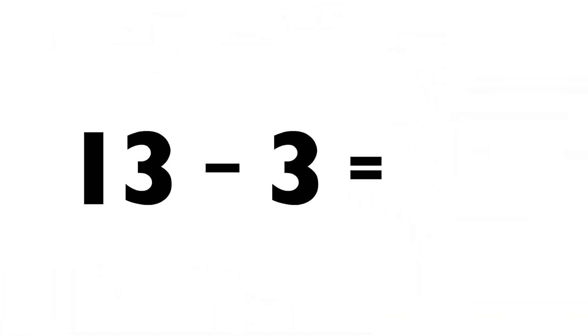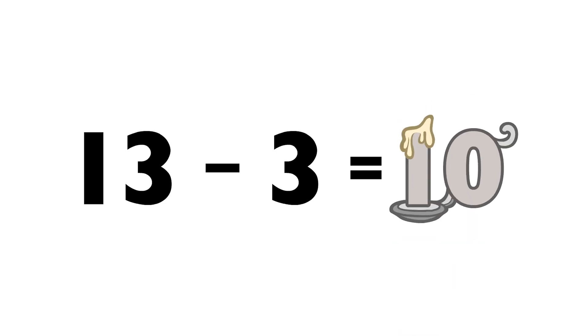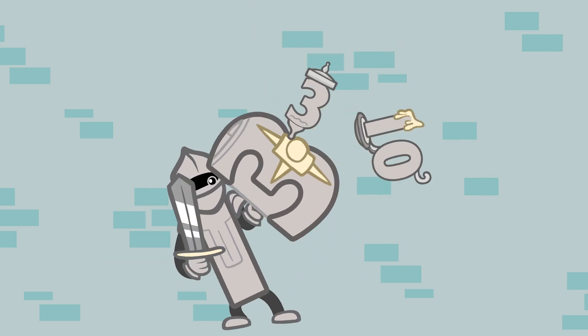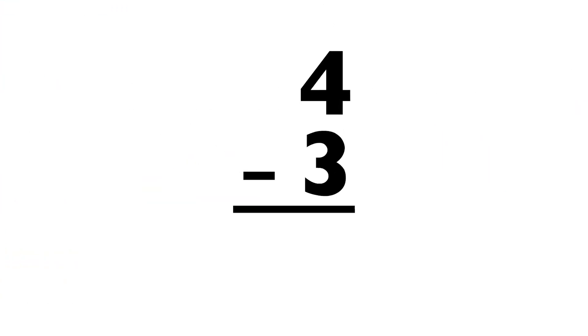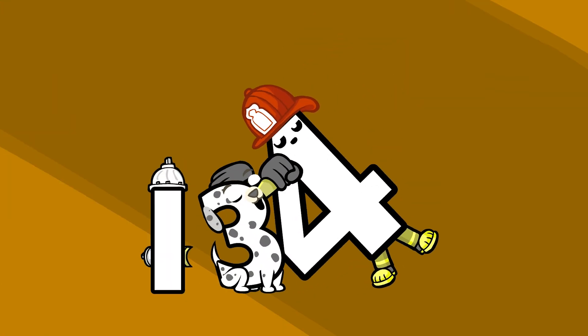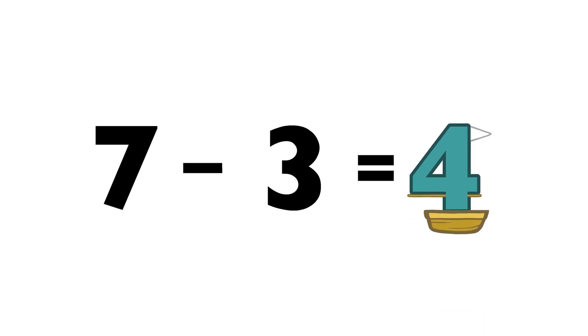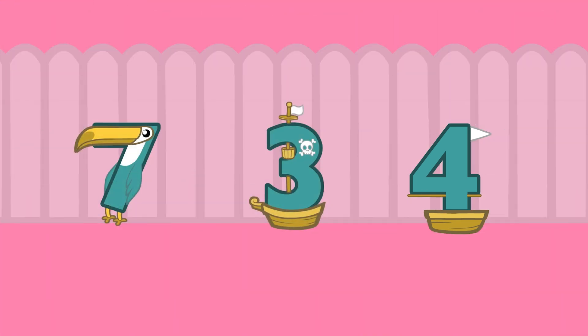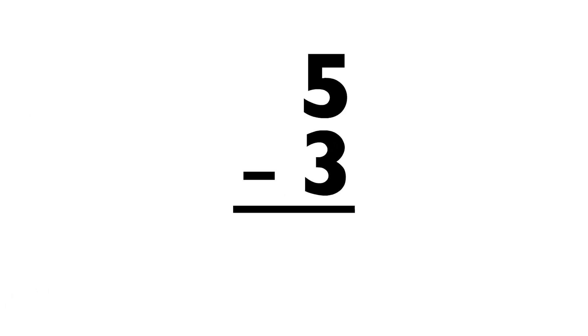Thirteen minus three equals ten. Four minus three equals one. Seven minus three equals four. Five minus three equals two.